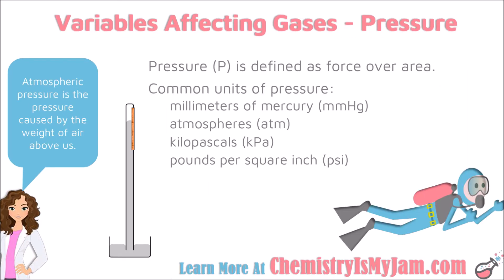Next, let's take a look at pressure. Pressure is defined as force divided by area — force would be like a push or a pull, and that force is measured and then divided by the area of space where it is occurring. Atmospheric pressure is the pressure caused by the weight of air above us. Gravity pulls our atmosphere down, and that exerts a force onto you and onto other things, and that is what causes atmospheric pressure.